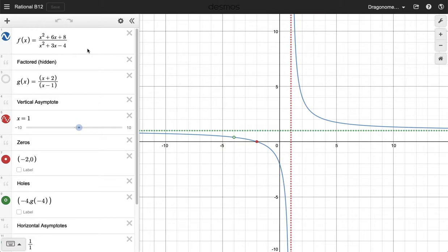The first thing we always do when we attack these functions is we factor the function. And when you factor f of x, you cancel out the x plus 4 terms and end up with x plus 2 over x minus 1.